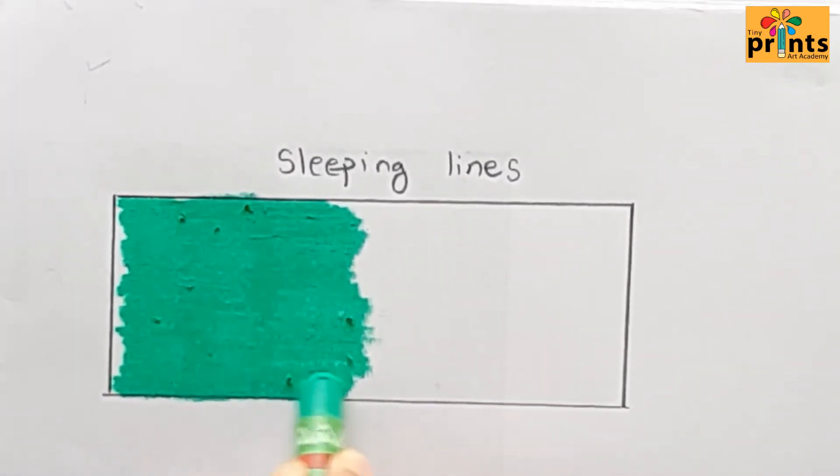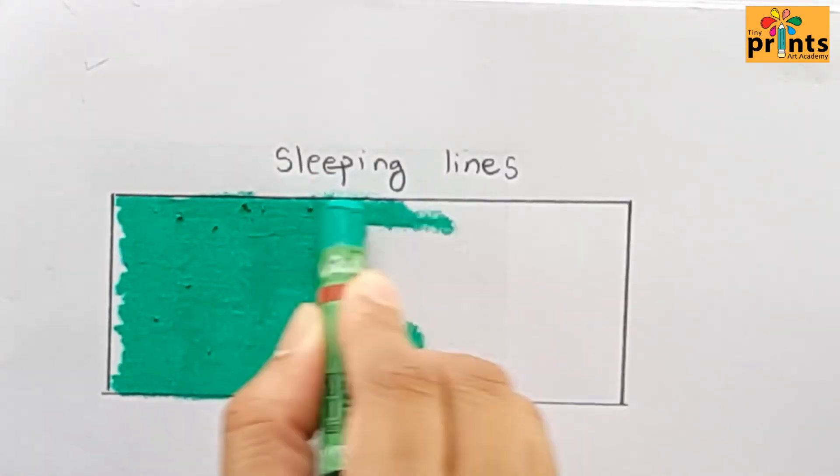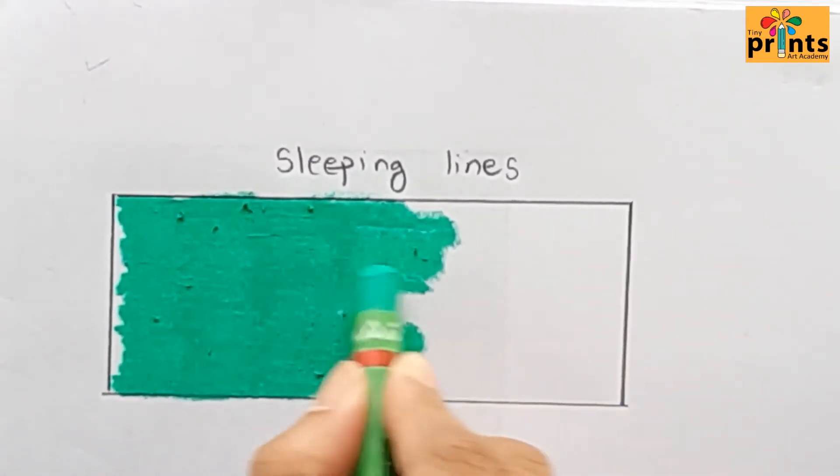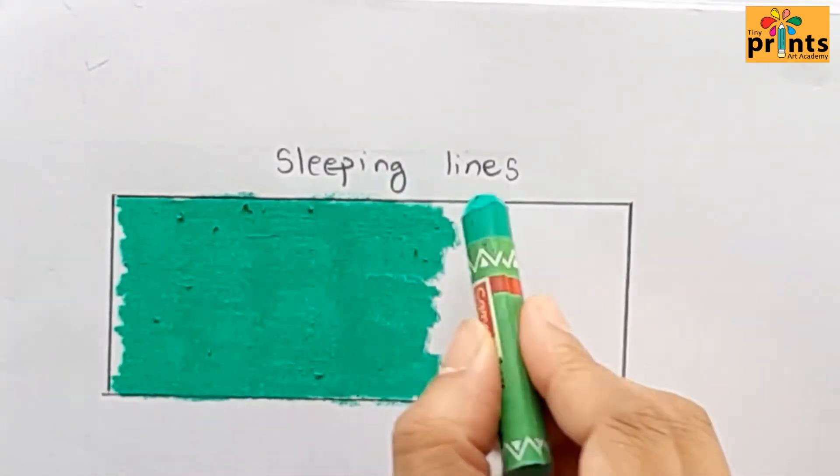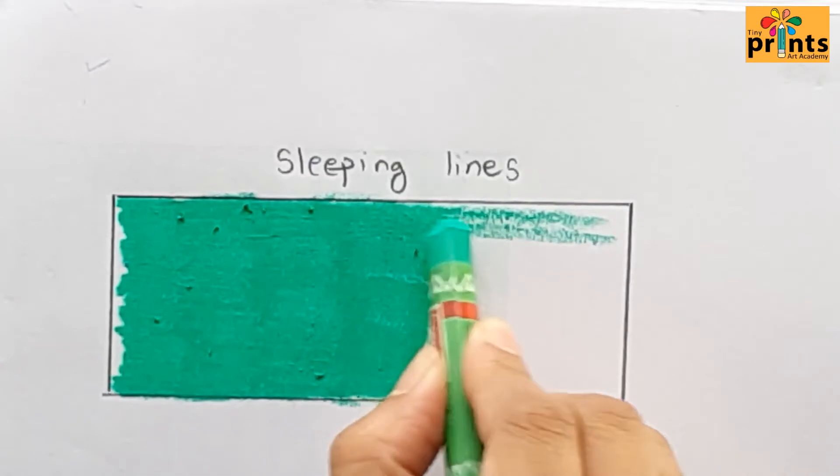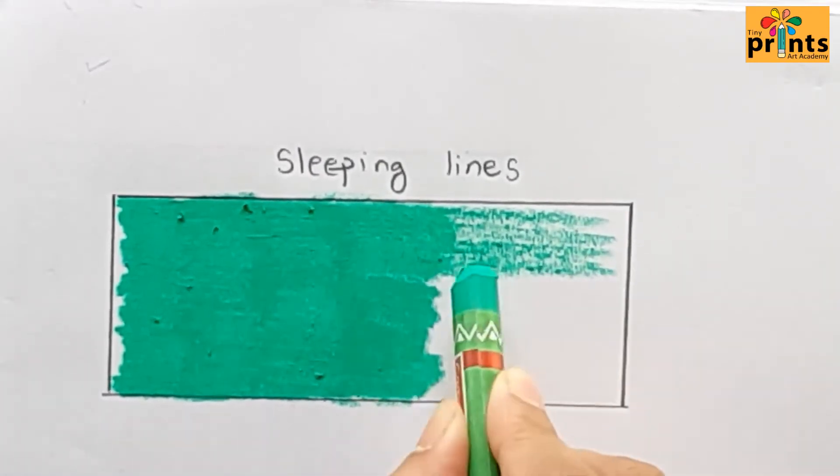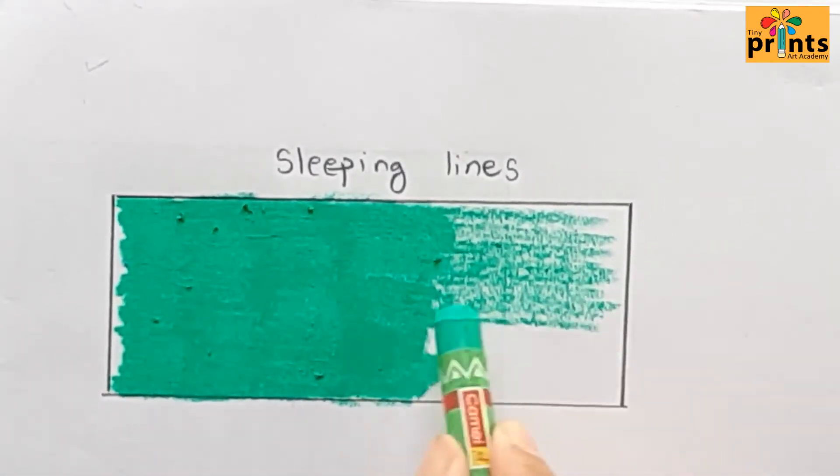Try and work within the box. Now try and create sleeping lines with less pressure on the crayon.